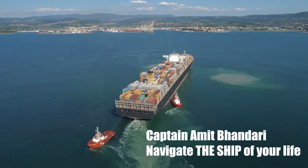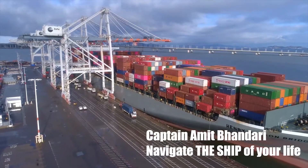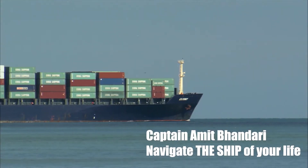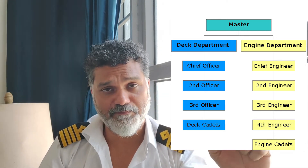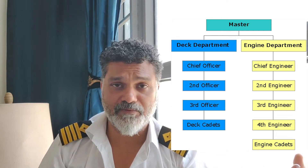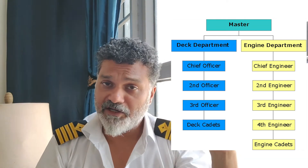The captain is overall in charge because only one person can be head of a family. The chief engineer, who is in charge of the engine room department, is almost in line with the captain — he's like his right hand, his main advisor on decision making. But the captain is the overall in charge. Then comes the chief officer, who is in charge of the deck department and is like the other hand for the captain.